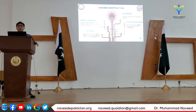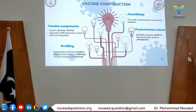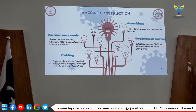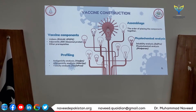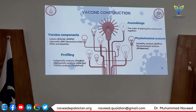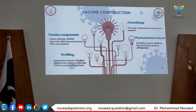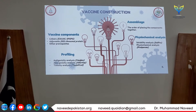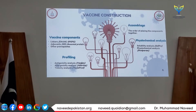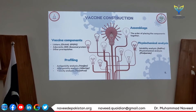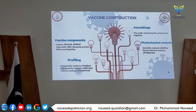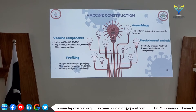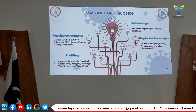Here we can see that the first step is vaccine construction. The vaccine component uses B-cell epitopes and T-cell epitopes. How we can link these epitopes — we use universal linkers available for this purpose. These linkers are available for different viruses, different bacteria, and also for human use, they are available in these linkers.